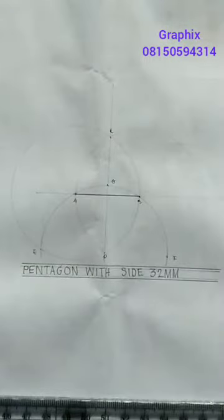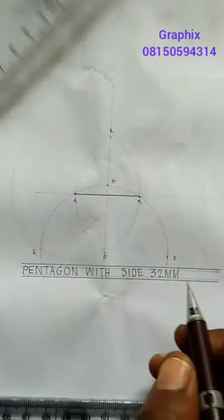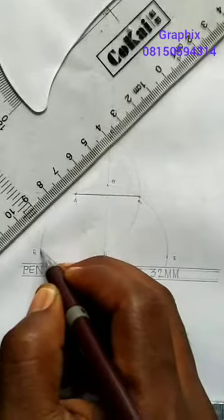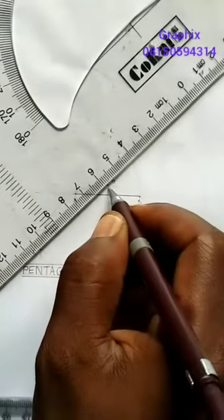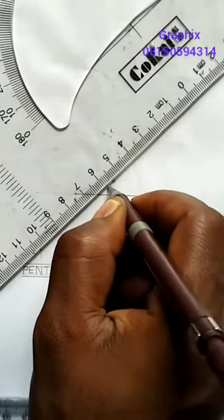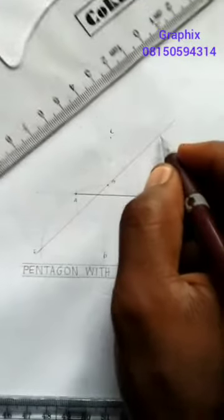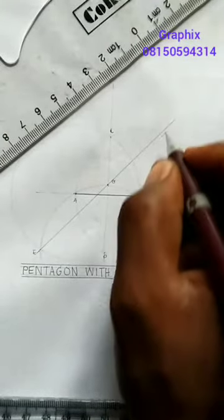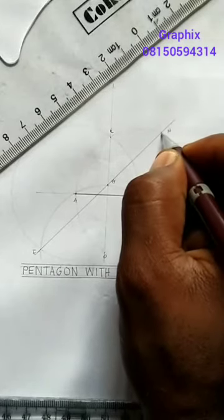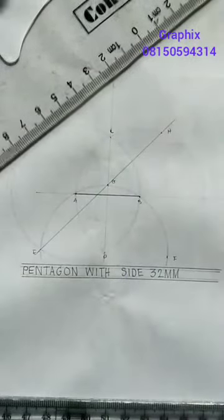Just take it now from point E, you draw a line that will go through G to cut this arc here, you call it H.